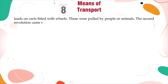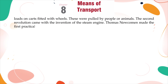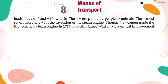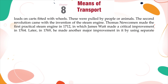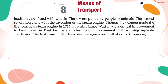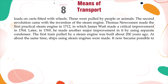The second revolution came with the invention of the steam engine. Thomas Newcomen made the first practical steam engine in 1712, in which James Watt made a critical improvement in 1764. Later in 1769, he made another major improvement by using a separate condenser. The first train pulled by a steam engine was built about 200 years ago. At about the same time, ships using steam engines were made. It now became possible to transport heavier loads much faster.